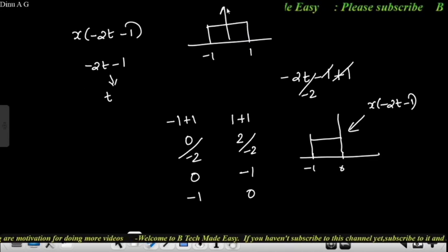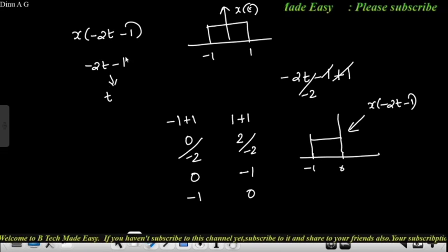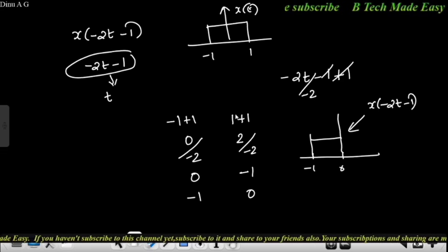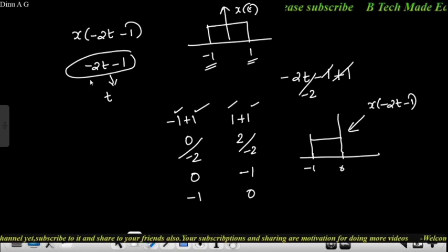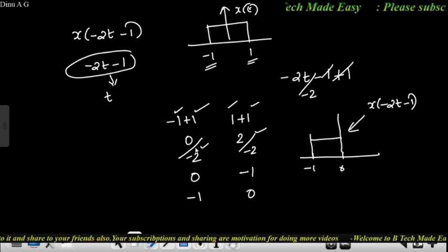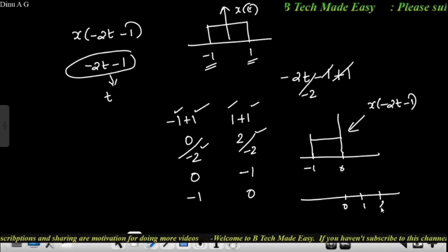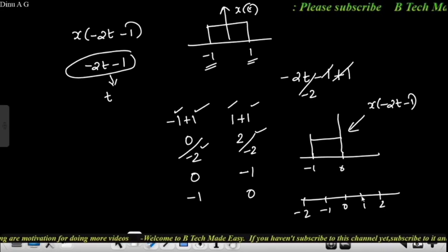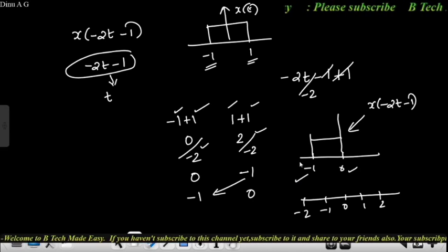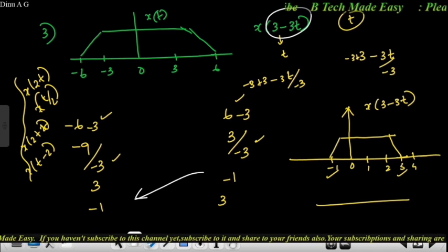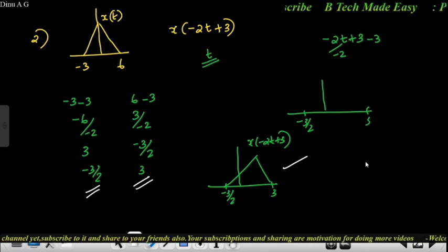For x of minus 2t minus 1: convert to plus 1, giving lower index 0 and upper index 1; subtract 1 to get minus 1 and 0; divide by minus 2 to get minus 1 by 2 and 0. There are many combinations of operations including advancing, scaling, compression and dilation covered in Part 1.